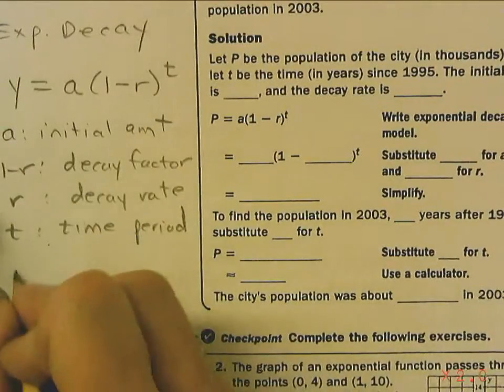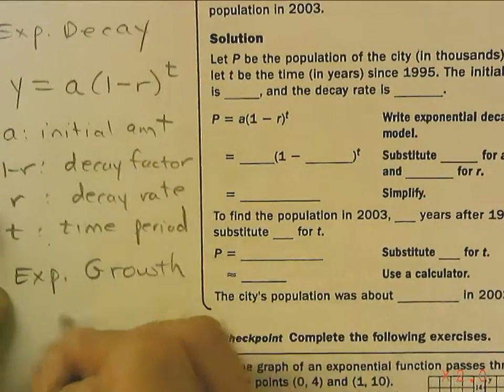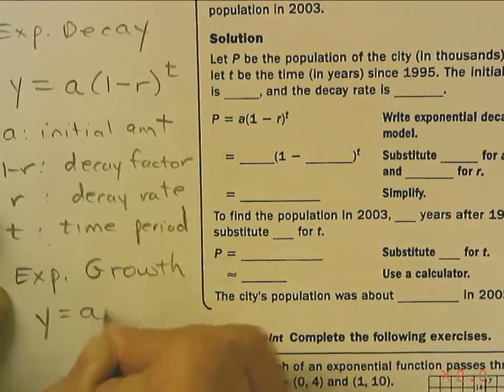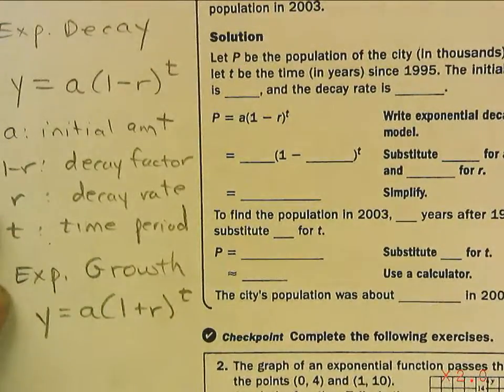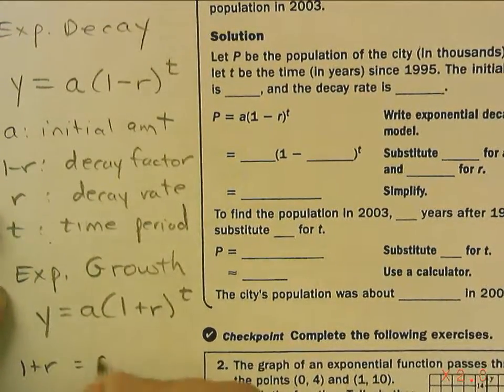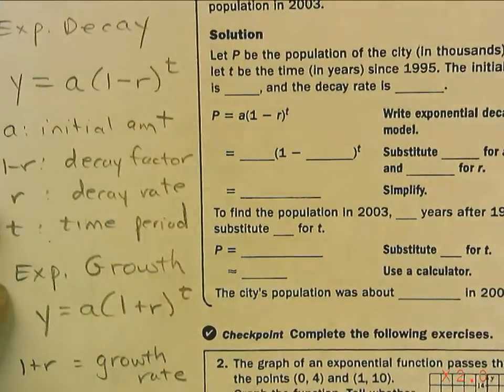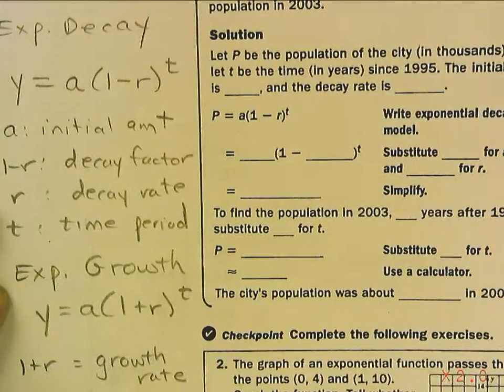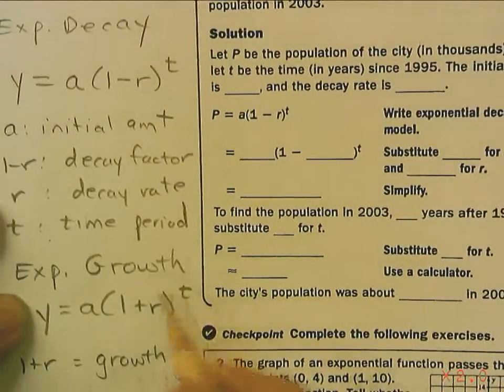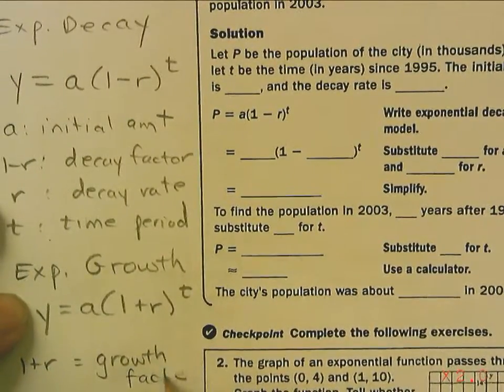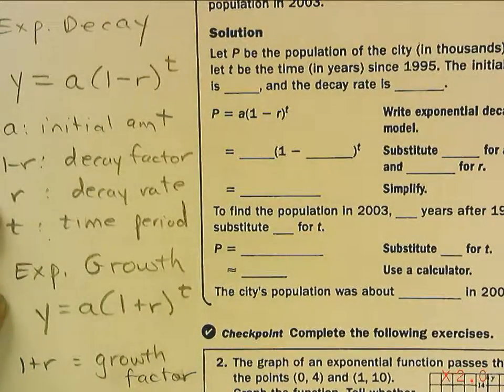You also have exponential growth model. The only difference is y equals a times 1 plus r to the t. We call 1 plus r the growth factor, and r is the growth rate. You do need to have these memorized.